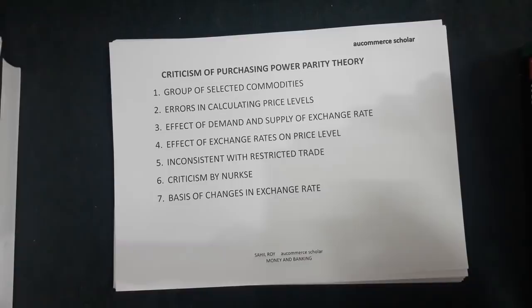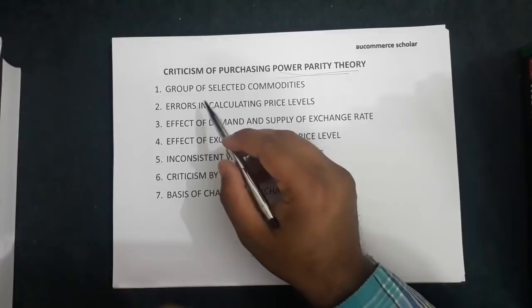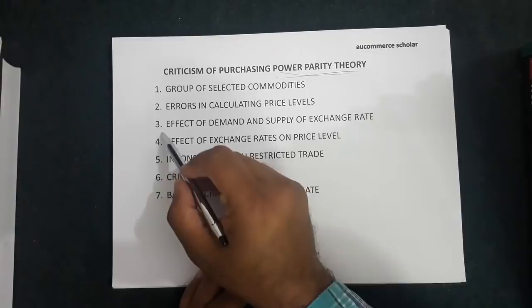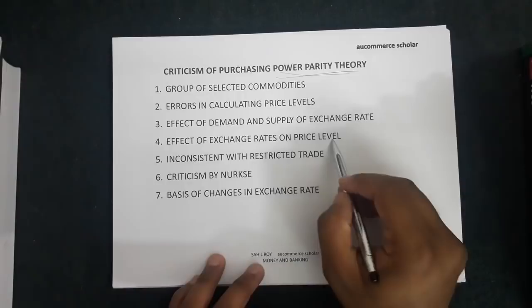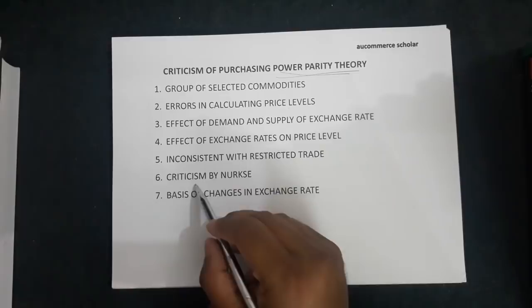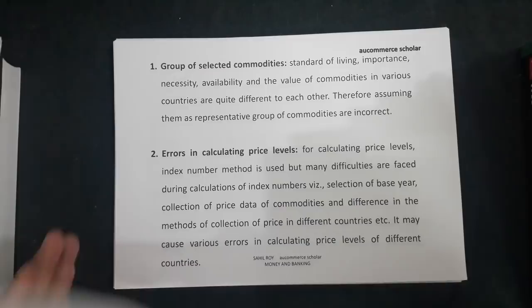Now let's look at the criticisms of the Purchasing Power Parity Theory. There are seven types of criticisms: (1) group of selected commodities, (2) errors in calculating price levels, (3) effect of demand and supply on exchange rate, (4) effect of exchange rate on price level, (5) inconsistent with restricted trade, (6) criticism by Nercse, and (7) basis of changes in exchange rate.